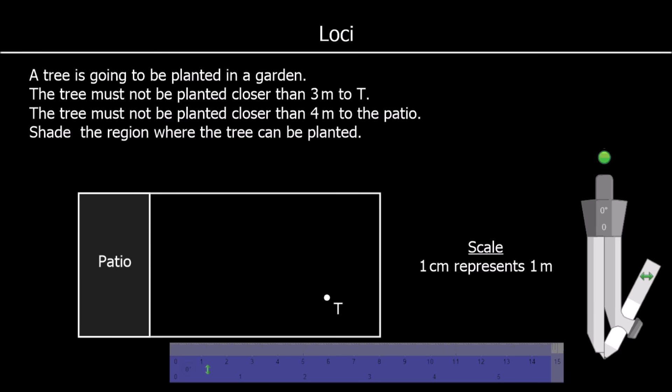And one more question. A tree is going to be planted in the garden. It must not be closer than 3 meters to T. So 3 meters, and each meter is a centimeter, so that will be 3 centimeters. It must not be within 3 centimeters to T, and it must not be within 4 centimeters of the patio.